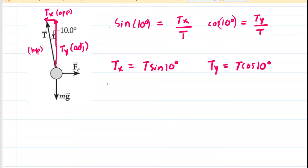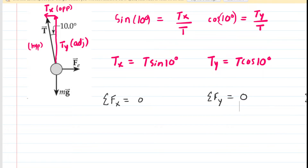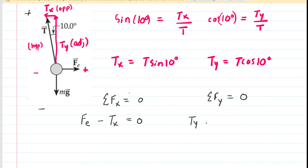Those components become necessary as we take the sum of forces in the X direction and the sum of forces in the Y direction, setting both equal to zero — because the sphere is in equilibrium. From Newton's second law, the sum of forces in each direction must equal zero. In the X direction, taking right as positive: the electric force minus T sub X equals zero. In the Y direction: T sub Y minus MG equals zero.